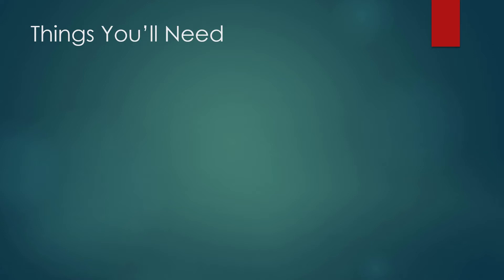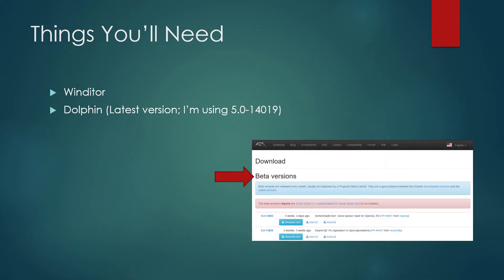First things first, you'll need some supplies. To start off, you'll want to download Windeter — you can find a link to it in the description. The next thing you'll need is Dolphin, the GameCube emulator. In case you have any issues dumping the files, I recommend you use the latest version. For this tutorial I will be using version 5.0-14019. If you haven't updated it in a while, you can find a link to the download page also in the description — just download the most recent beta version.